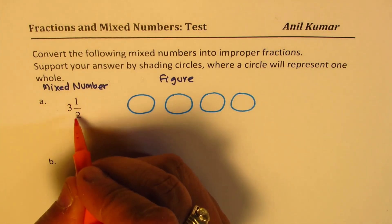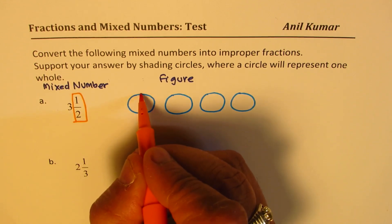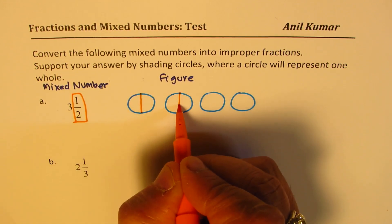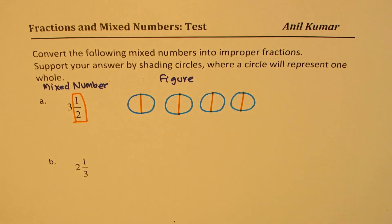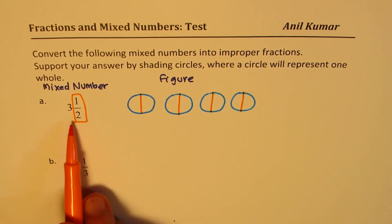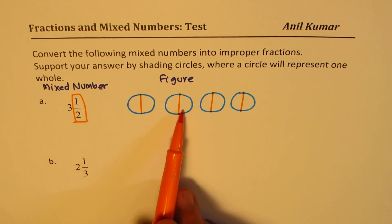Now, when we have half here, half means each circle should be divided into two equal parts. That is the meaning of half. As a fraction, the denominator tells you how many parts the whole will be divided into.